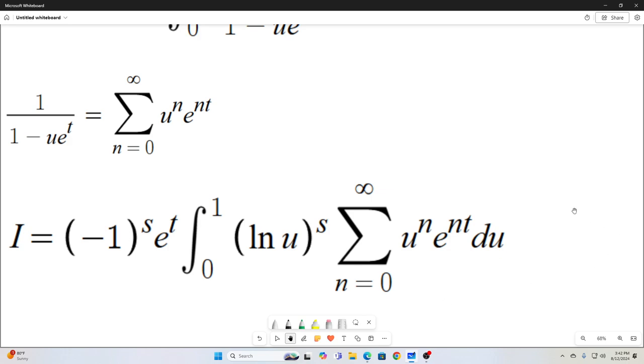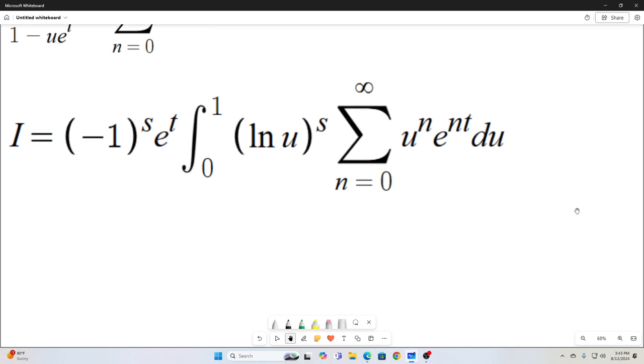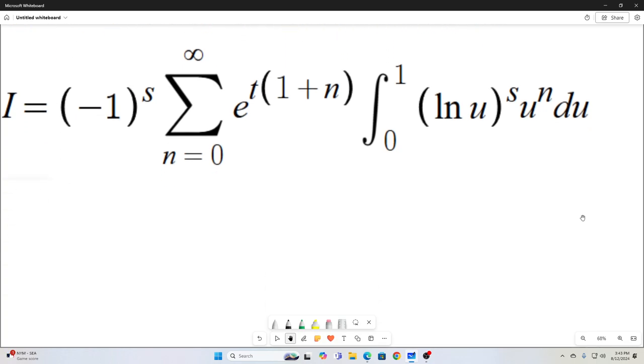So it looks like we're making things a lot worse, but don't worry, it'll all come together in the end. All right. So next, all I did was I manipulated this a little bit by switching the integration and summation notations and then bringing everything that did not depend on u outside the integral sign.